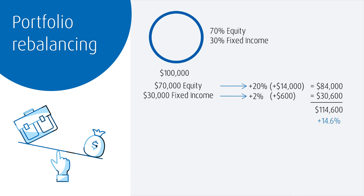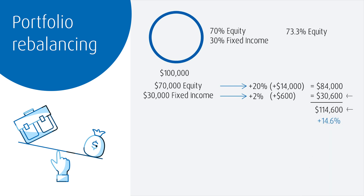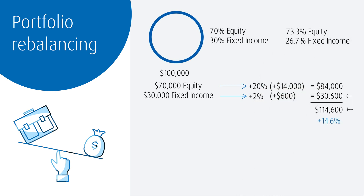Overall, we've gained 14.6% for the year. But more importantly, our new asset allocation is calculated as follows. For our equities, we take $84,000 and divide by $114,600, which equals 73.3%. Our fixed income is $30,600 divided by $114,600, which equals 26.7%. Our new asset allocation has drifted away from the initial 70% equity, 30% fixed income. This portfolio is now slightly more aggressive.